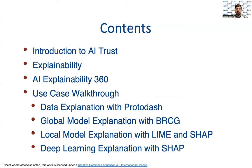To help keep everything in context, here is an overview of what we will be covering. We will start with an introduction to principles of AI Trust and the AIX 360 Toolkit, which helps put those principles into practice. Then we will spend some time walking through a use case — an AI model that diagnoses breast cancer — to demonstrate how to use a few of the algorithms in the toolkit. Finally, we will offer an example of how these tools can also be used for more intricate deep learning projects.